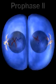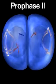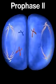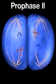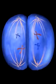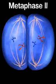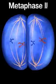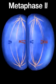During prophase II, a spindle forms in each of the two new cells. During metaphase II, the chromosomes, still made up of sister chromatids, line up at the equator.